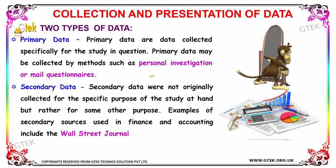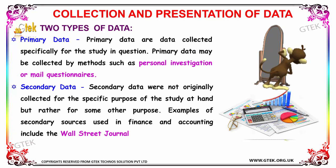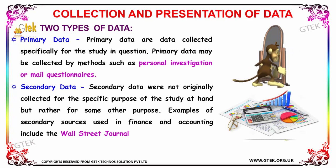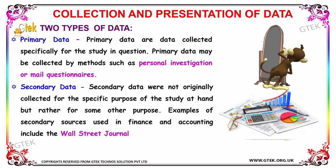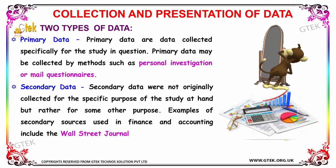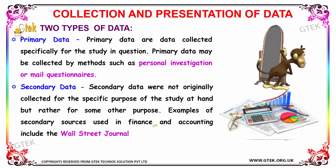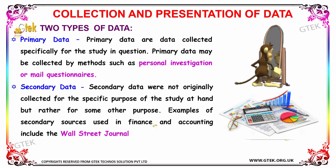Secondary data were not originally collected for the specific purpose of the study at hand, but rather for some other purpose. An example of secondary data is financial or accounting records, such as the Wall Street Journal and so on. These are the two types of data in terms of collection and presentation of data.